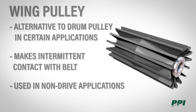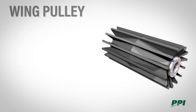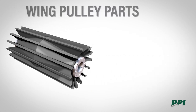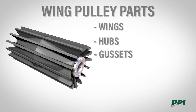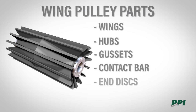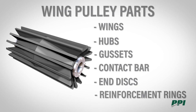The wing pulley is used in non-drive applications only. The parts of the wing pulley consist of the wings, hubs, gussets, contact bars, end discs — which are possible depending on geometry — and reinforcement rings, which are possible depending on customer preference.